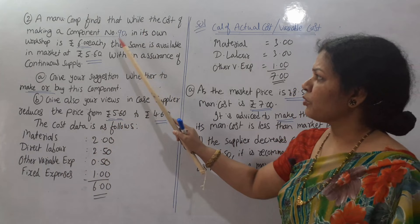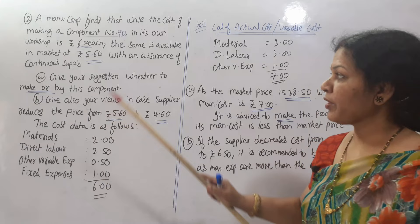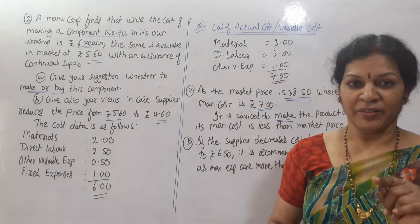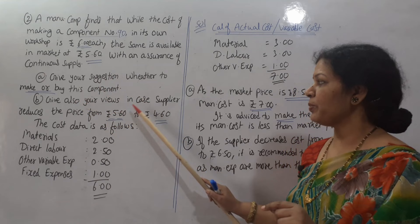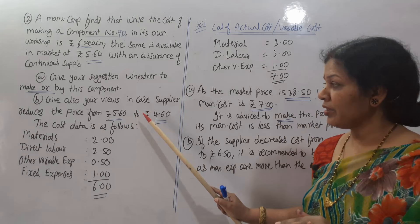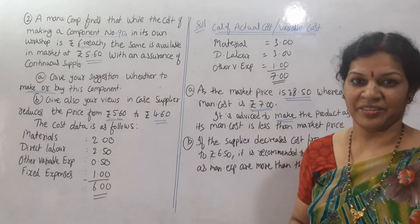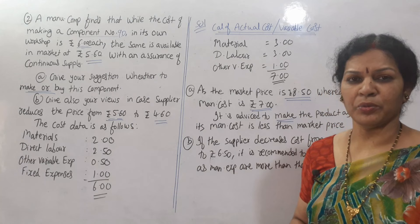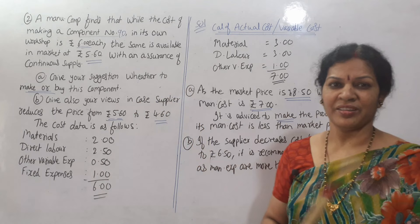The total cost is 6 rupees including fixed expenses. If we exclude fixed expenses, the actual variable cost comes to 5 rupees only. The market price is 5 rupees 60 paisa — since 5 rupees is less, it is better to make the product. For the second case, if the supplier decreases to 4 rupees 60 paisa, our manufacturing cost is 5 rupees. Since 4 rupees 60 paisa is less, it is advised to buy the product — why manufacture for 5 rupees when it is available for 4 rupees 60 paisa?